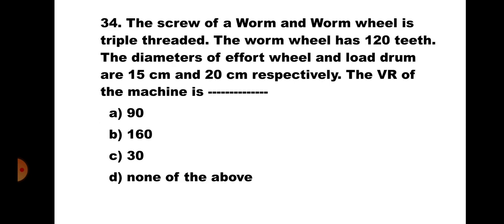Question number 34: The screw of worm and worm wheel is triple-threaded. The worm wheel has 120 teeth and the diameters of effort wheel and load drum are 15 cm and 20 cm respectively. The VR is: A) 90, B) 160, C) 30, D) none of the above. Formula: VR = (T × D_effort) / (n × d_drum) = (120 × 15) / (3 × 20) = 1800/60 = 30. The correct answer is C) 30.